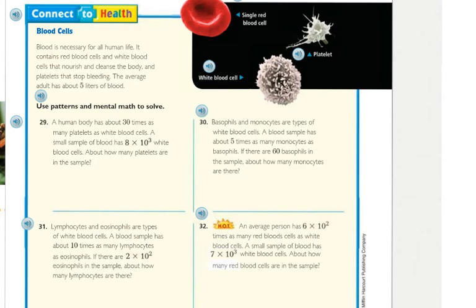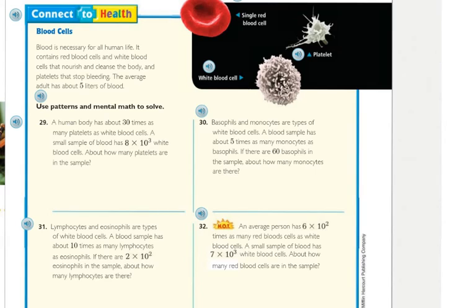Blood cells. Blood is necessary for all human life. It contains red blood cells and white blood cells that nourish and cleanse the body, and platelets that stop bleeding. The average adult has about 5 liters of blood. Use the pattern in mental math to solve. Number 29: A human body has about 30 times as many platelets as white blood cells. A small sample of blood has 8 times the 3rd power of 10 white blood cells. About how many platelets are in the sample? So if I'm looking at the platelets, I have 30 times 8 times 10 to the 3rd power. 3 times 8 is 24, and 30 times 8 is 240. Now if I'm multiplying that to the 3rd power of 10, I'm going to add 3 more zeros — 1, 2, 3 — for my 3rd power of 10. So I should get 240,000 platelets. Remember to always label.